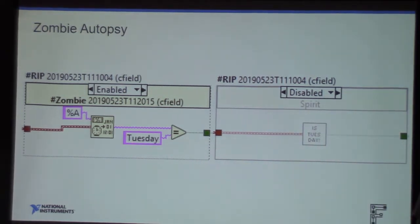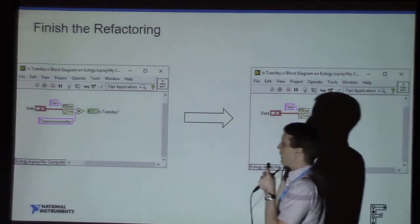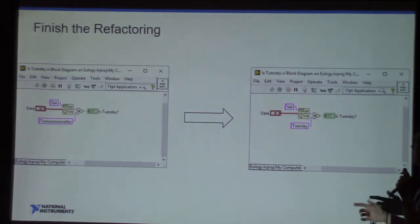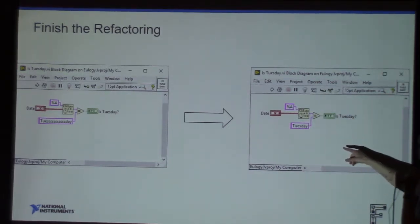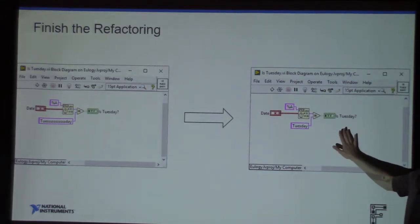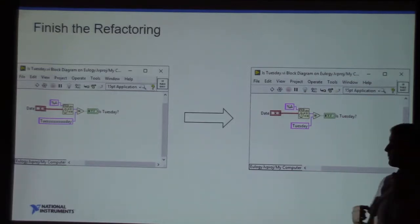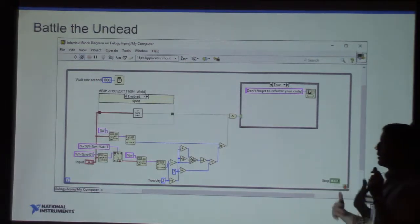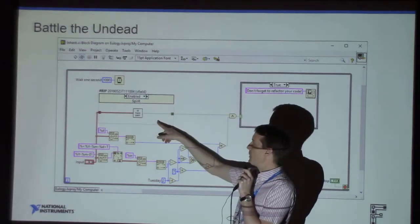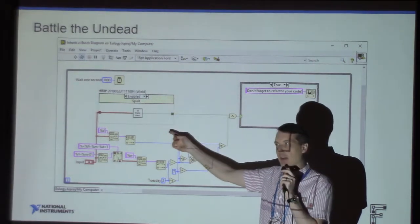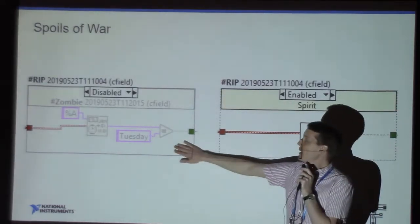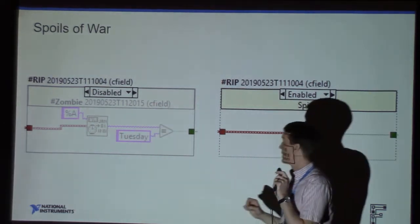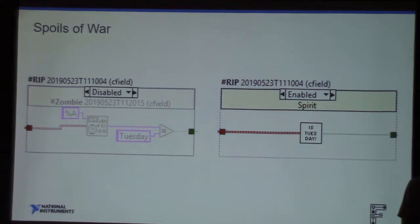That buys us time to go into the sub-VI and see what happened. When we created it and did some refactoring, we introduced a bug — it appears that the cat walked across the keyboard. So we go back in and fix the Tuesday string to just be 'Tuesday.' Now we're confident the code will work. We can go back and battle that undead — we want to smite it and get rid of it. All that simply does is enable the spirit diagram and disable the zombie diagram. We still keep the timestamp and bookmark around, because that provides evidence on when it is appropriate to remove this code.